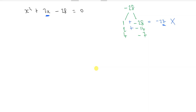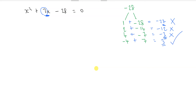2 and minus 14 gives minus 12 — that doesn't work. 4 and minus 7 gives minus 3 — that doesn't work. But we're looking for plus 3. Minus 4 and 7 looks very promising — if we add those together we get 3. So we can use these two values in our brackets.